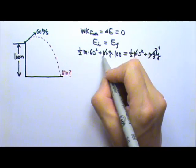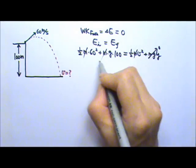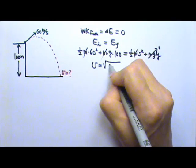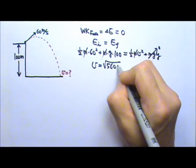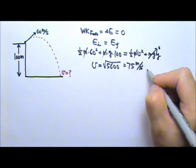So every single term has the mass. We can cancel the mass. So if we do this calculation, plugging in the g is 10, we would have the speed that is the square root of 5600 and it's 75 meters per second.